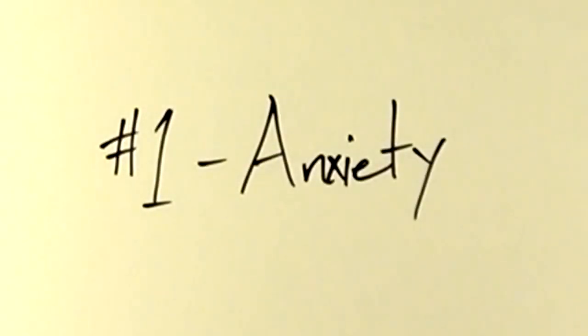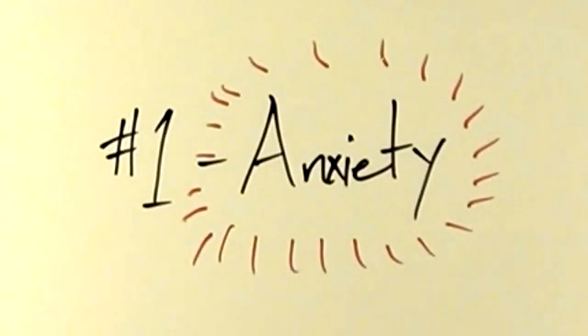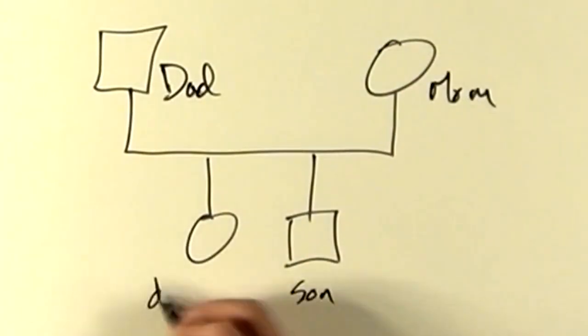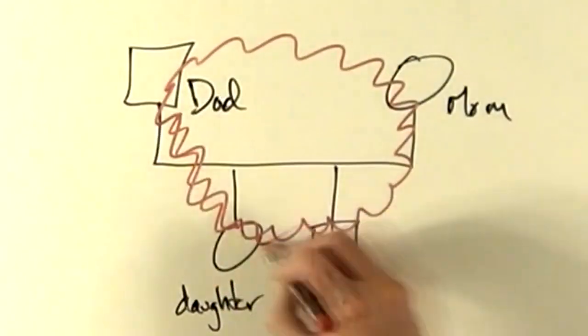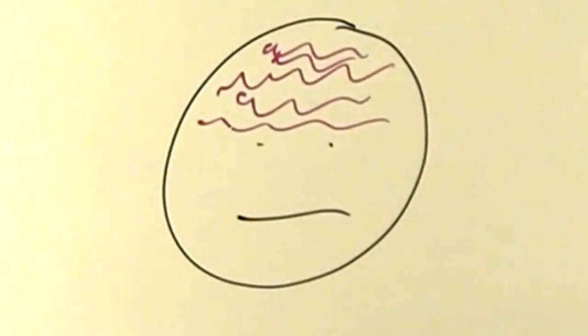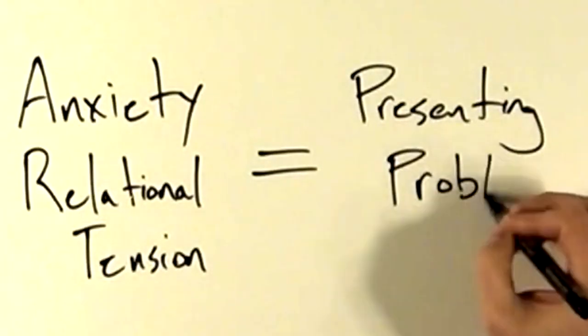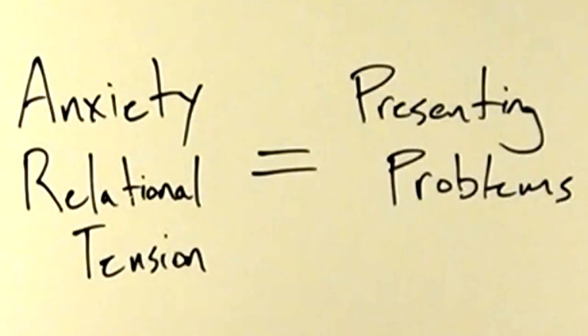Number one, anxiety. He used the word anxiety as a general term for emotional tension or stress. Bowen believed that anxiety moves through the system from one person to the next. He believed it impairs our ability to think and reason. He also believed that many presenting problems are a result of anxiety or stress.